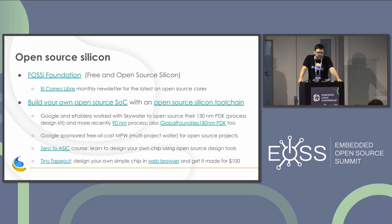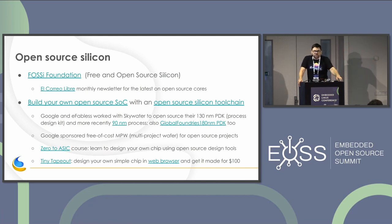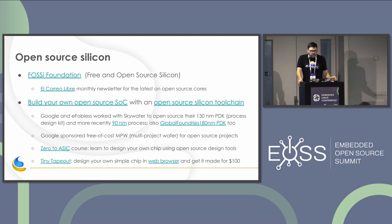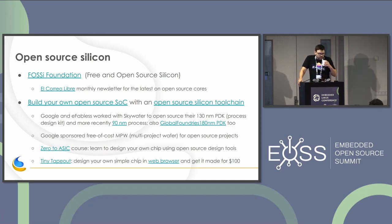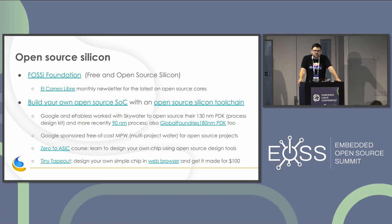One thing I think is super interesting is the idea of doing open source all the way down to the transistor level — the actual physical transistor cells. One of the organizations driving this is the Free and Open Source Silicon Foundation, or FOSSi Foundation. They have a monthly newsletter. Big news back in 2020 was that Google and a company called eFabless got together with a fab in the US called SkyWater and open sourced the PDK — process design kit.